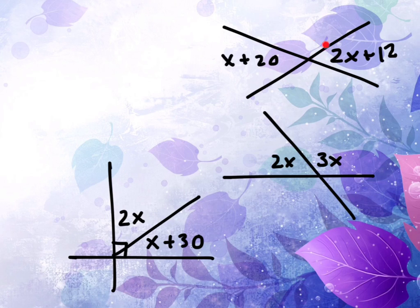So we've got a vertical pair there, vertical angles, we have a linear pair here, we have a set of complement angles here.